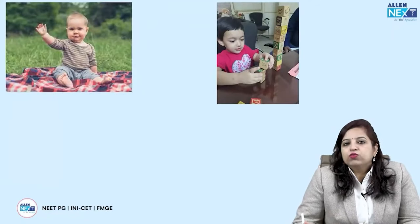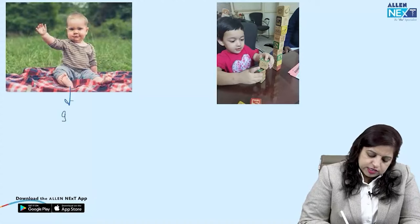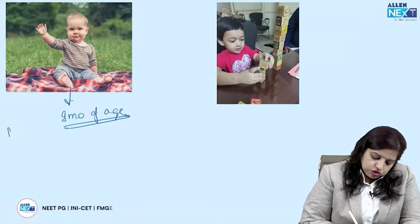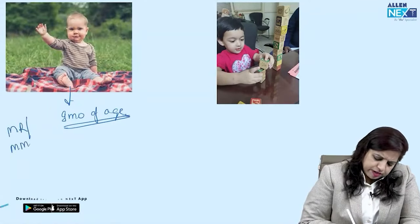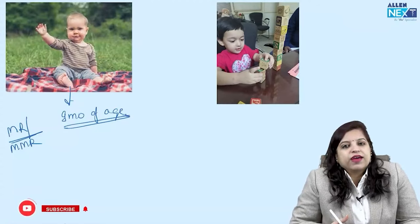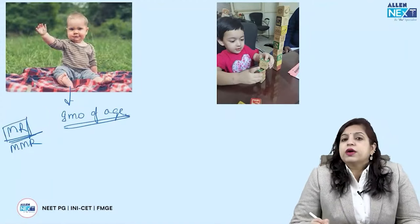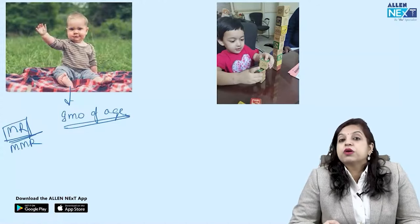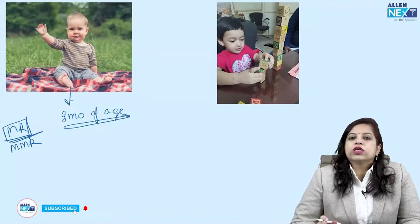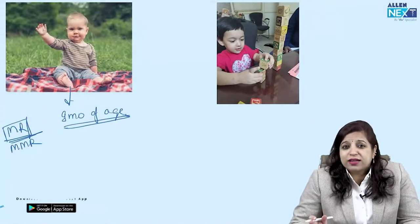A child waving bye-bye: the most probable age is nine months. Remember, the MR/MMR vaccine is given at nine months — the child waves bye-bye after the injection. For cube tower construction: at 15 months the child builds a tower of two cubes, at 18 months three cubes. For two years and three years, multiply by three: two years = six cubes, three years = nine cubes.